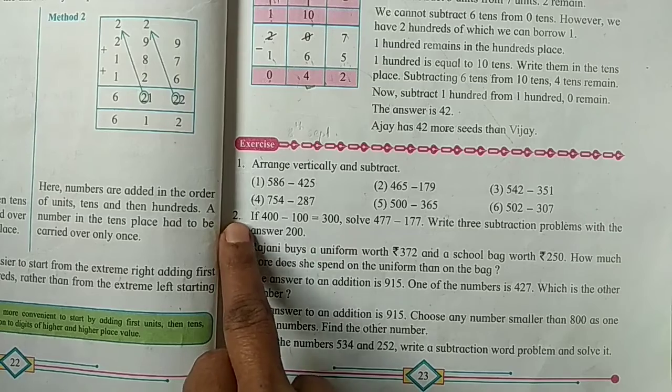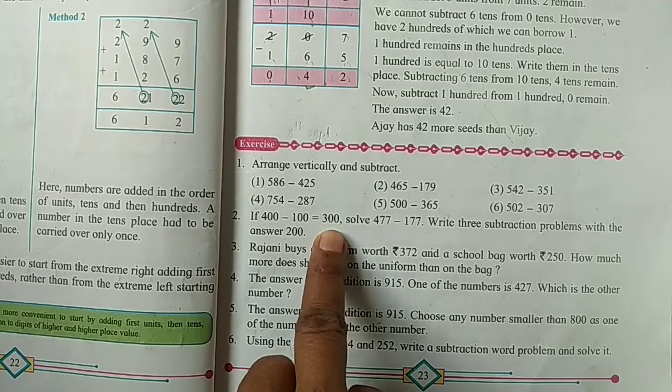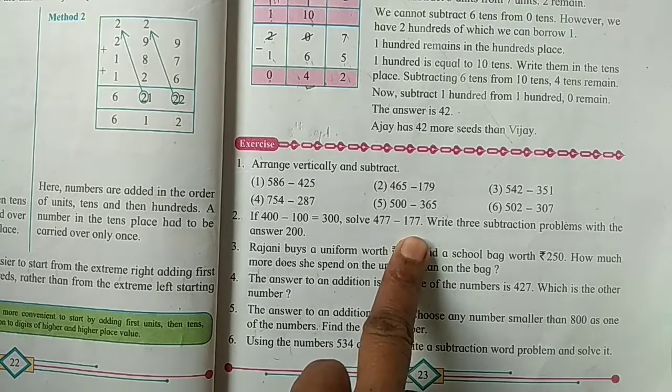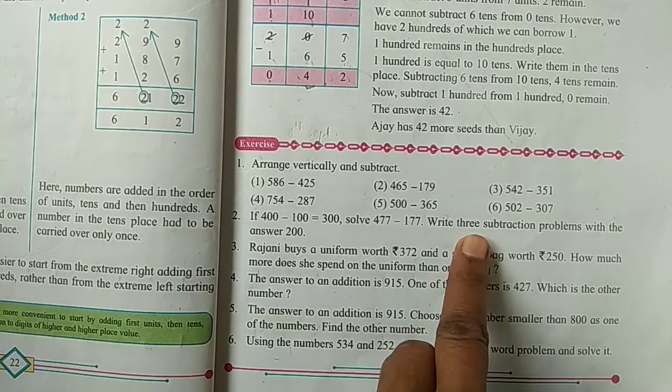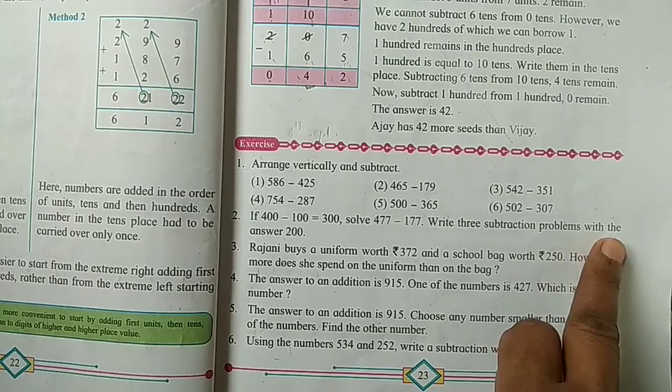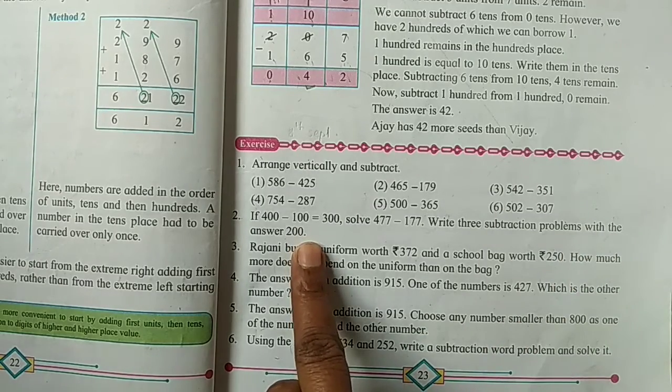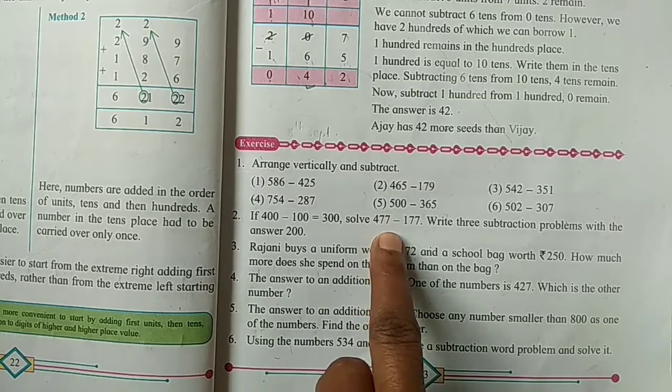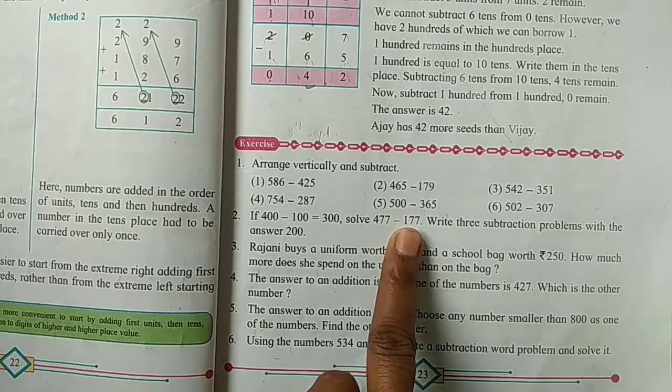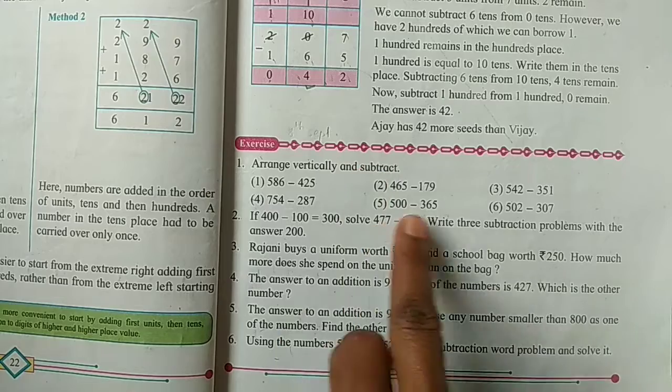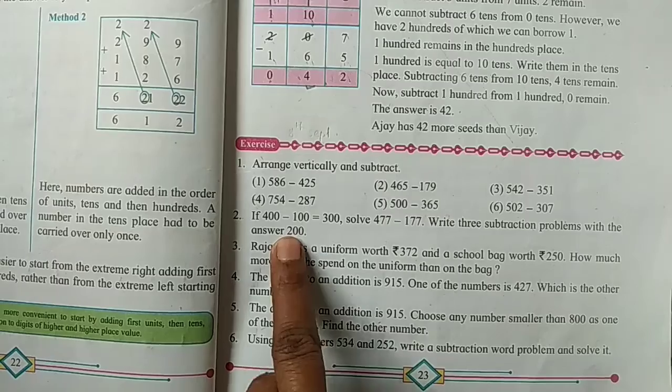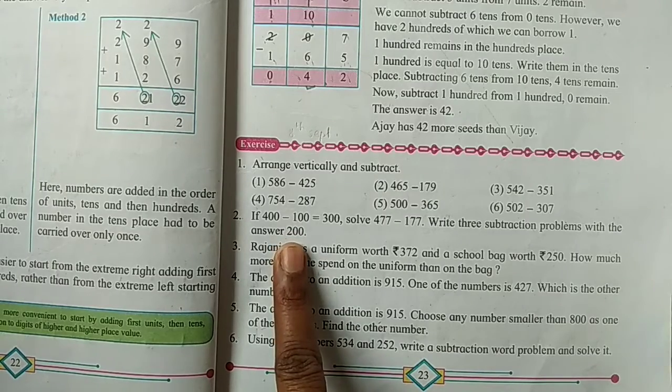Question number 2: if 400 minus 100 we get as 300, then we solve 477 minus 177. Write 3 subtraction problems with the answer 200. Now we are solving this first example and afterwards we will write 3 subtraction problems and these problems answer will be 200.